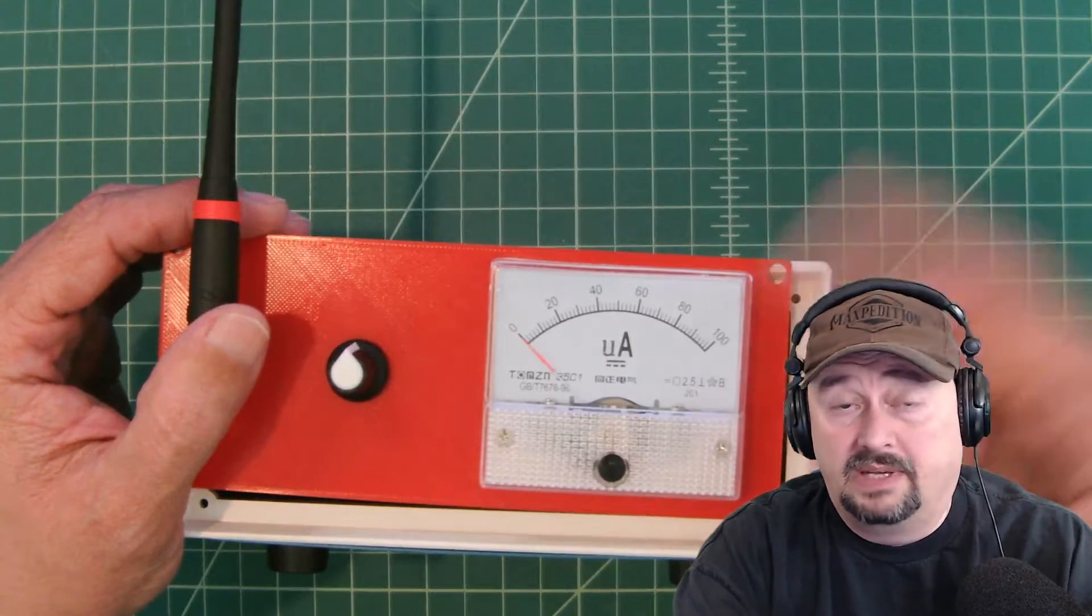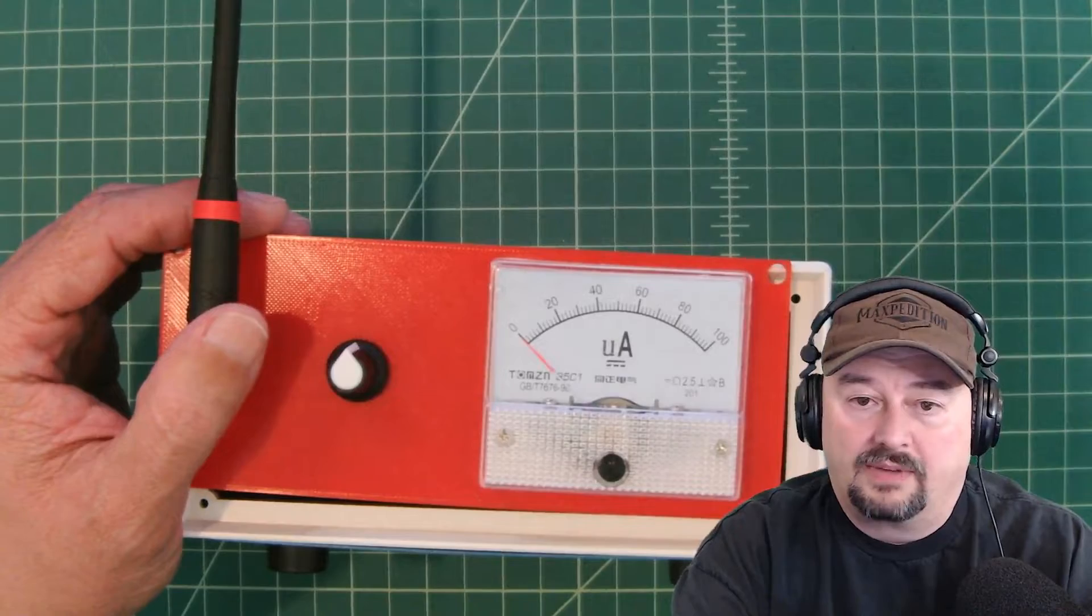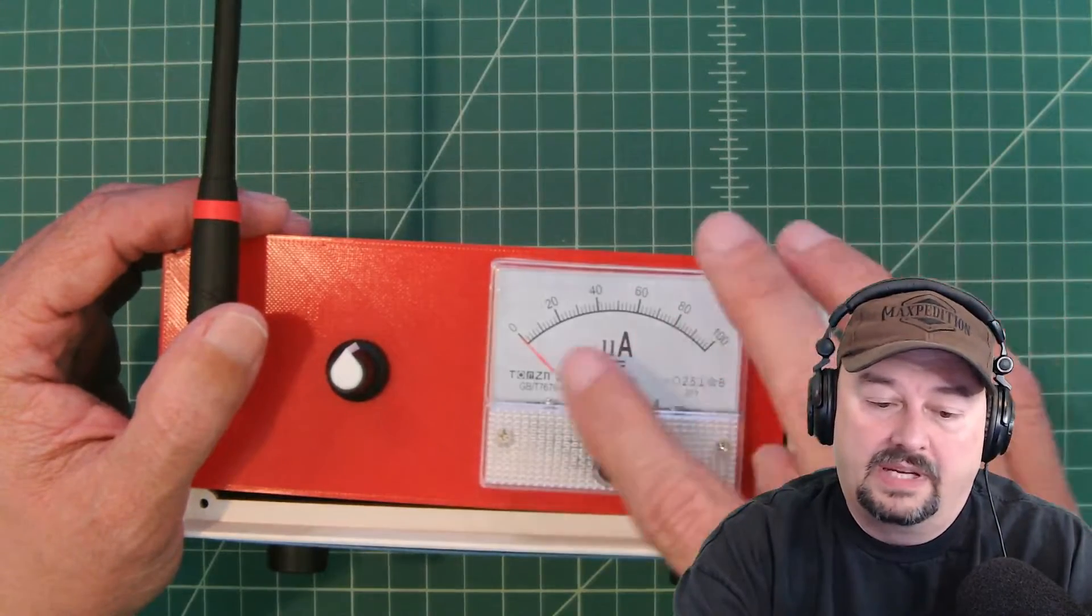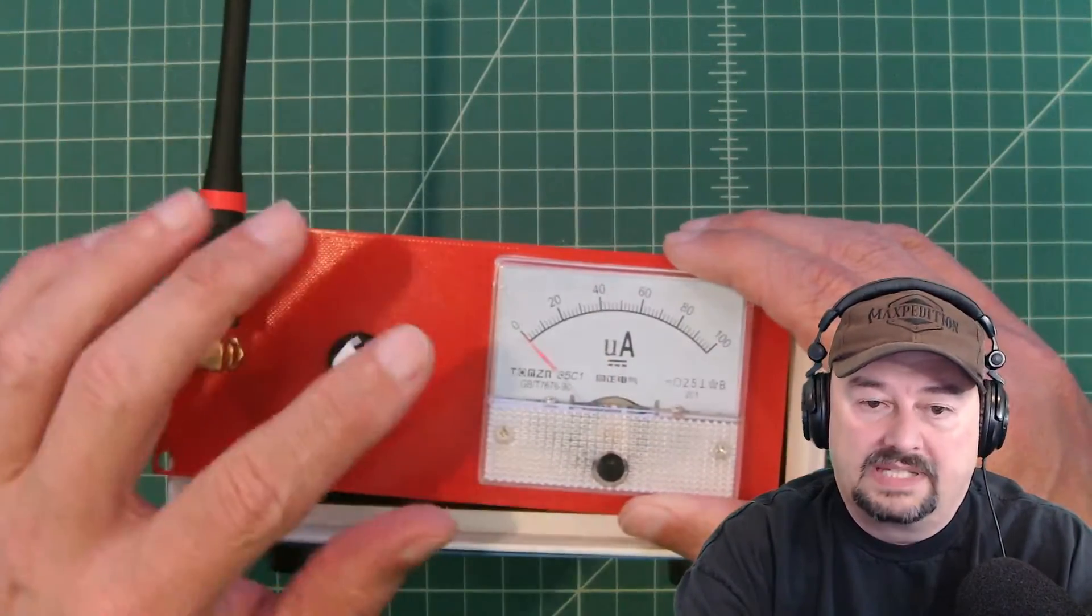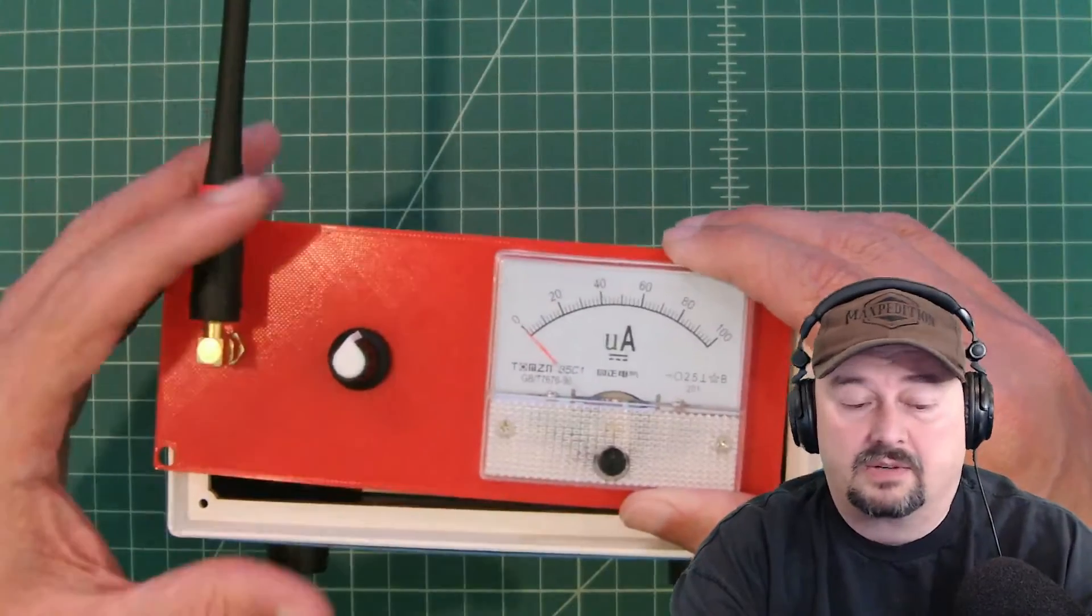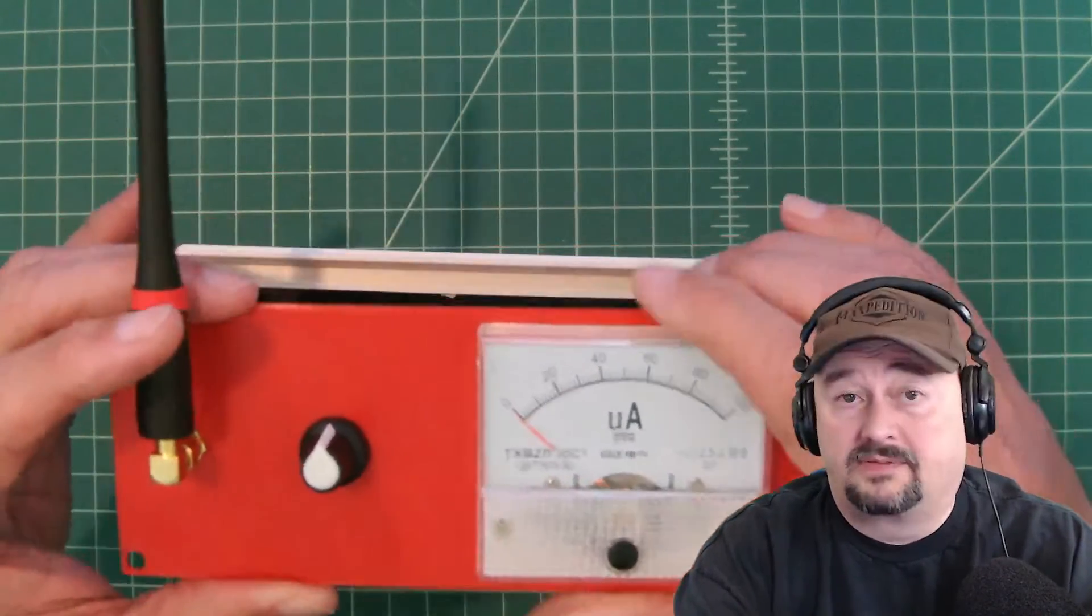Now if you don't have a 100 microamp meter you could use a different meter. I played around with a couple of different ones to try to find the one that matched well with my sensitivity and would actually register when I was trying to detect RF, and this worked the best for me.